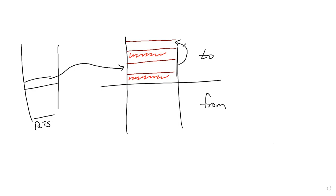Now we need to ask ourselves: what happens when the memory is depleted? If you ask for another 'new', there is no way to get more memory because the 'to' is full. So the first thing we do is swap the names — this becomes the 'from' and this becomes the 'to'. The reason we have those names is because we are taking from the 'from' and putting into the 'to'. We start from the runtime stack or the globals, which is known as the live set.